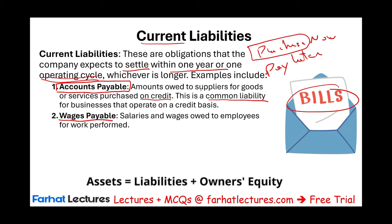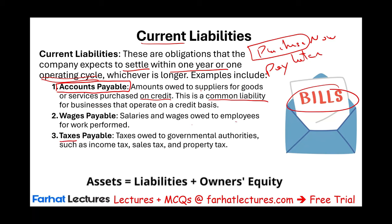Wages payable represents salaries and wages owed to employees for work performed but not yet paid — it's a current liability. A helpful rule: if you see the word 'payable,' it's a good chance you're dealing with a liability, because payable means you have to pay it, and if you owe it, it's a liability. We also have taxes payable — taxes owed to governmental authorities such as income tax, sales tax, or property tax. Since governments want their money within one year, taxes payable is a current liability.